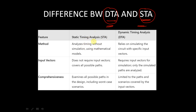Both Static Timing Analysis and Dynamic Timing Analysis are used to analyze timing paths — whether the output arrives at the correct time and whether the circuit behaves according to its timing specifications. Regarding method: STA analyzes timing without simulation, using mathematical models, whereas Dynamic Timing Analysis relies on simulating the circuit with specific input vectors.